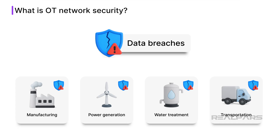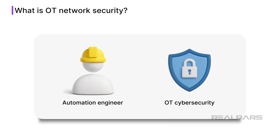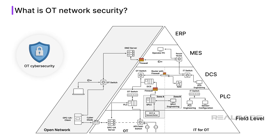These attacks can lead to physical disruptions and financial loss. That is why it is vitally important for automation engineers to understand the application of effective OT cybersecurity. While OT cybersecurity covers a broad range of concerns, including physical access, system integrity, and secure development, the following content and associated course focus specifically on the network layer that forms the backbone of any industrial cybersecurity strategy.